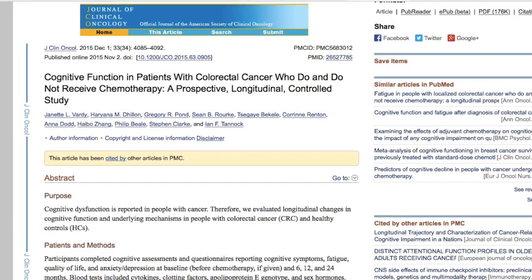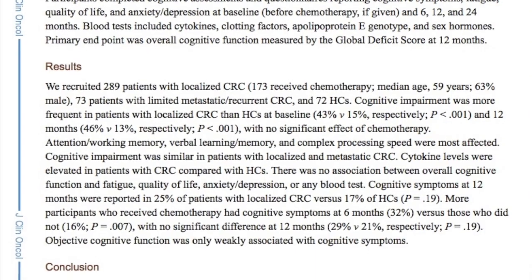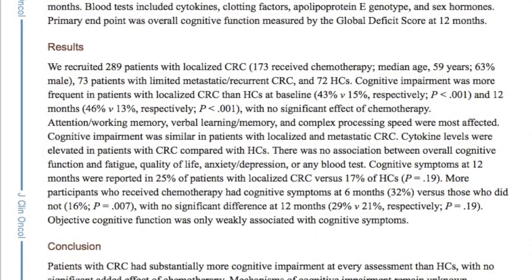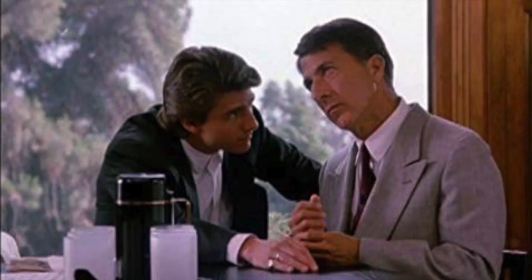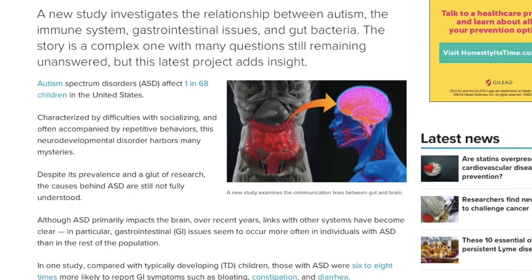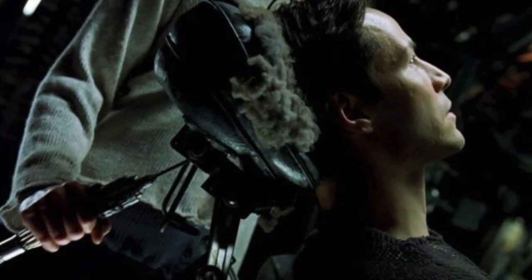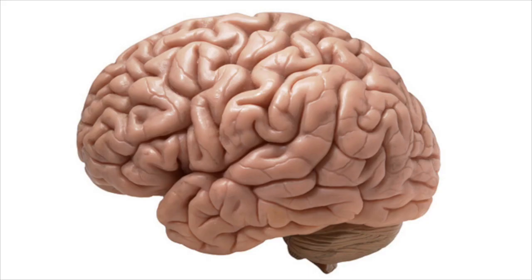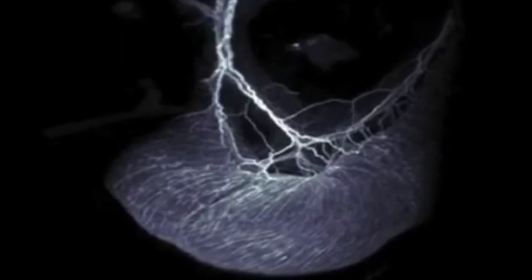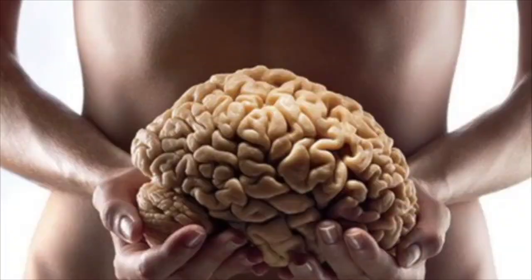A study published in the Journal of Clinical Oncology has shown a correlation between the decline of cognitive function and colorectal cancer, and the condition known as autism has also been associated with problems in the digestive tract. It is also important to remember the intrinsic connection between the brain and the digestive tract — we have over 100 million neurons in the gut, and some scientists have referred to them as a second brain.